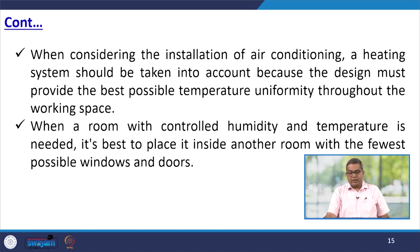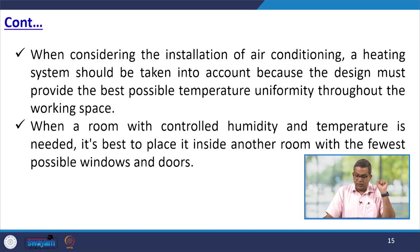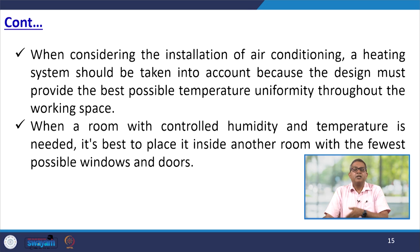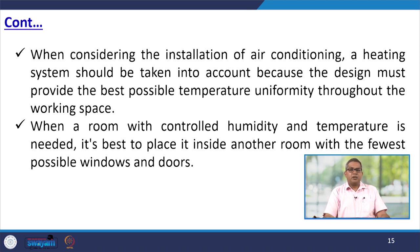When considering the installation of air conditioning, a heating system should be taken into account because the design must provide the best possible temperature uniformity throughout the working space. If data spans from 2 degrees Celsius to 45 or 46 degrees Celsius, a heating system is needed to normalize the chamber temperature to the desired level. When a room with controlled humidity and temperature is needed, it is best to place it inside another room with the fewest possible windows and doors so that atmospheric contamination can be avoided.